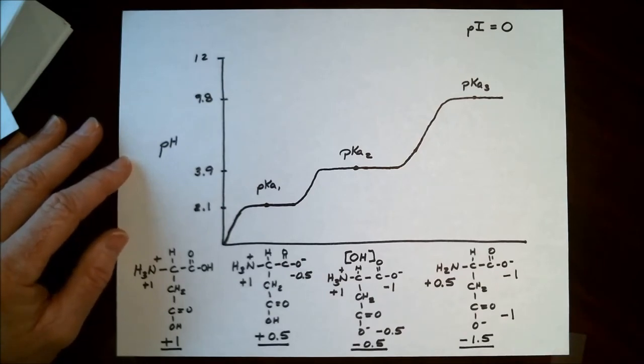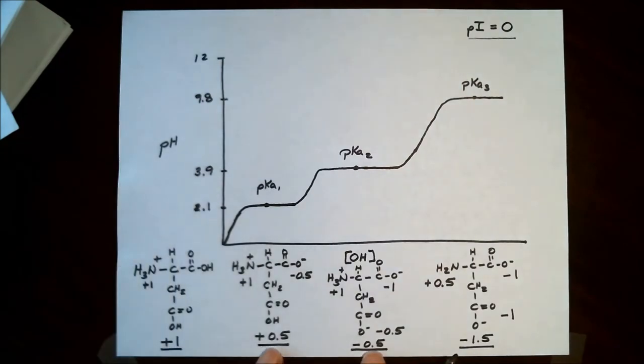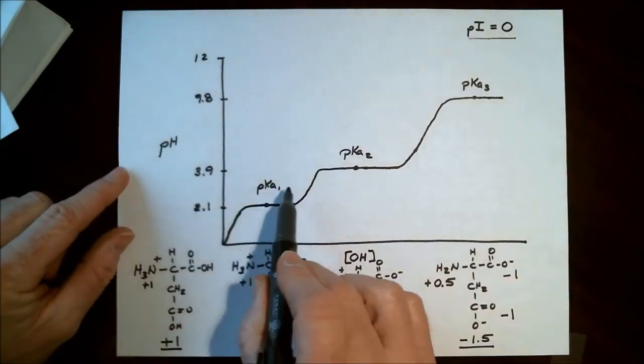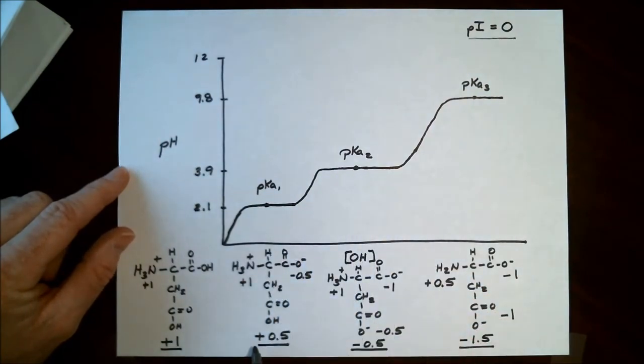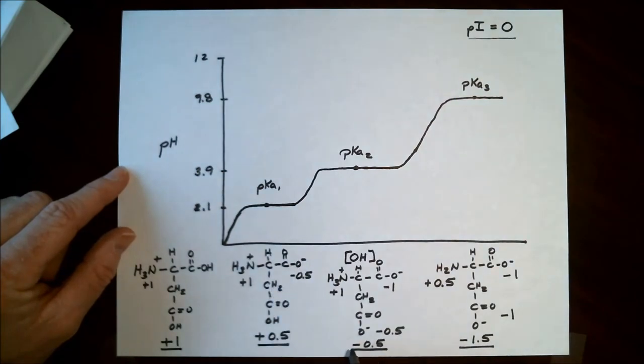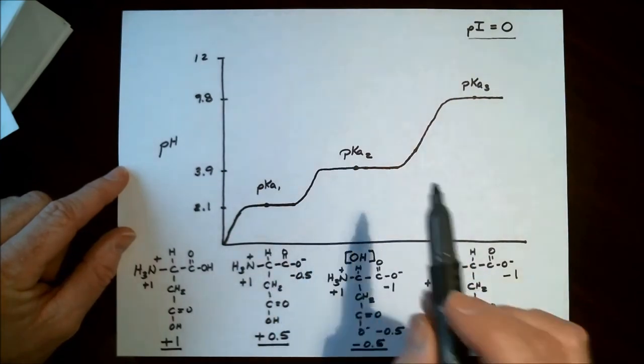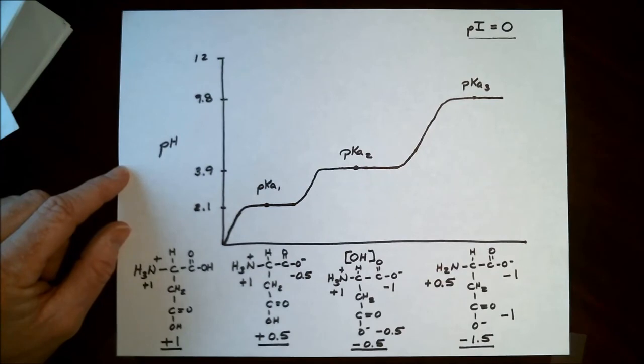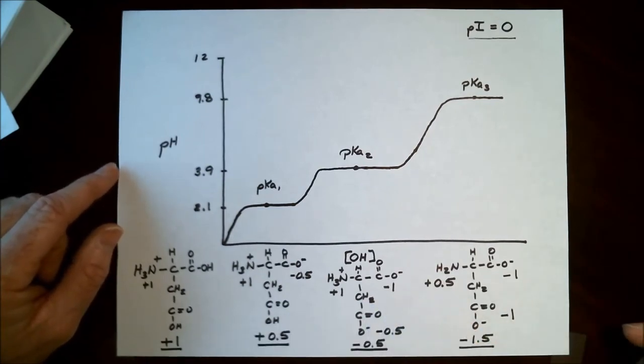Now our objective is to identify the isoelectric point where the net charge on the molecule is zero. If we look at these two pKa's of pKa1 and pKa2, we can see that we have a positive 0.5 charge at pKa1, a negative 0.5 charge at pKa2. So based on this information, the charge of zero will be somewhere between these two values.